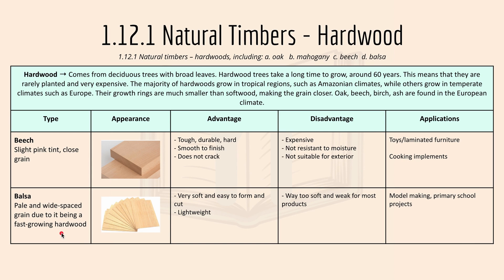Balsa is pale and white to green due to it being a fast-growing hardwood. The advantage is it's very soft and easy to form and cut, and it's relatively lightweight. The disadvantage is it's too soft and weak for most products. Applications include model making or primary school projects.